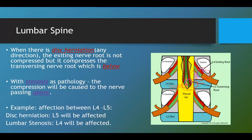Taking the example of L4–L5: in disc herniation, L5 would be affected as the traversing nerve root; and for lumbar stenosis, L4 would be affected as the exiting nerve root, due to compression of the foramina. Thank you.